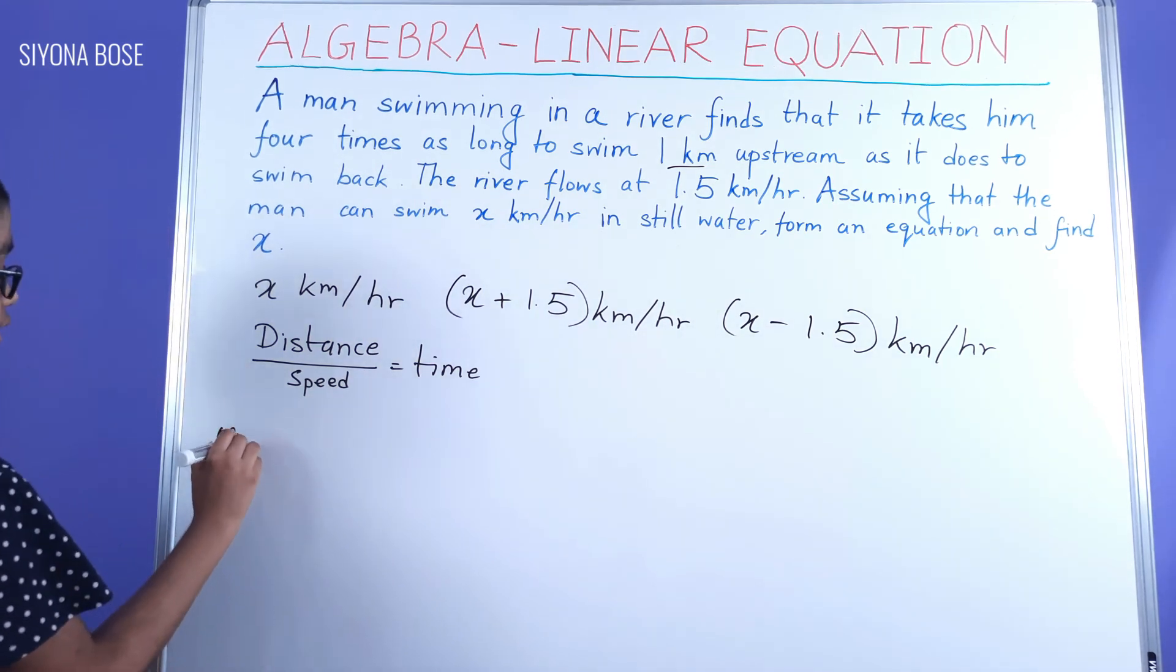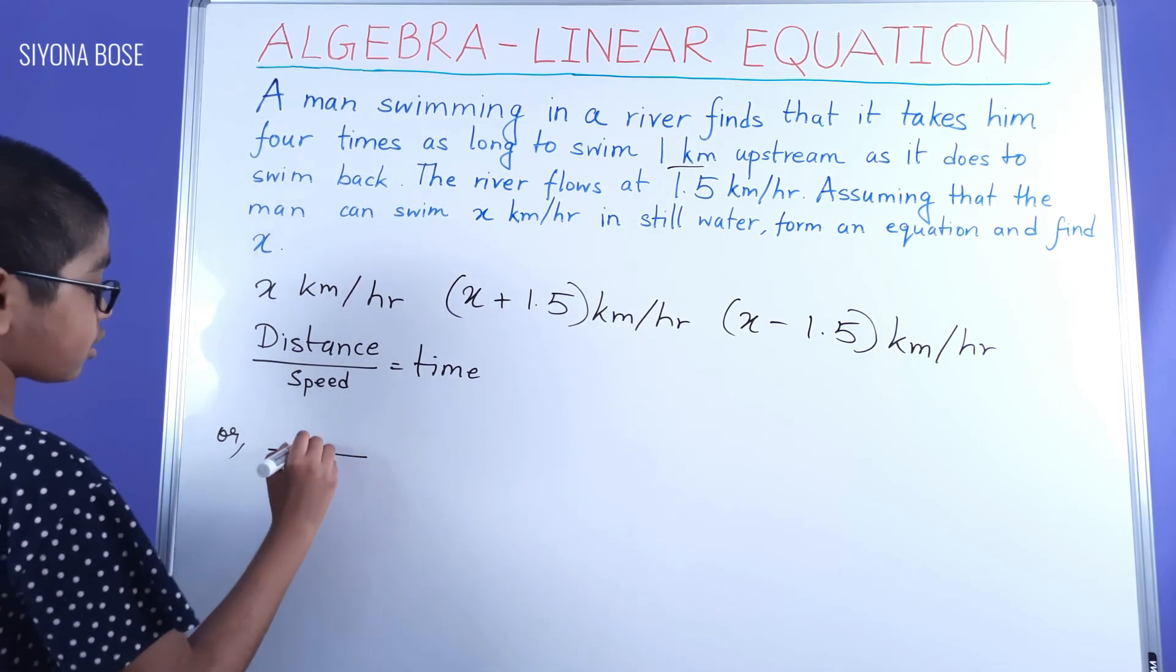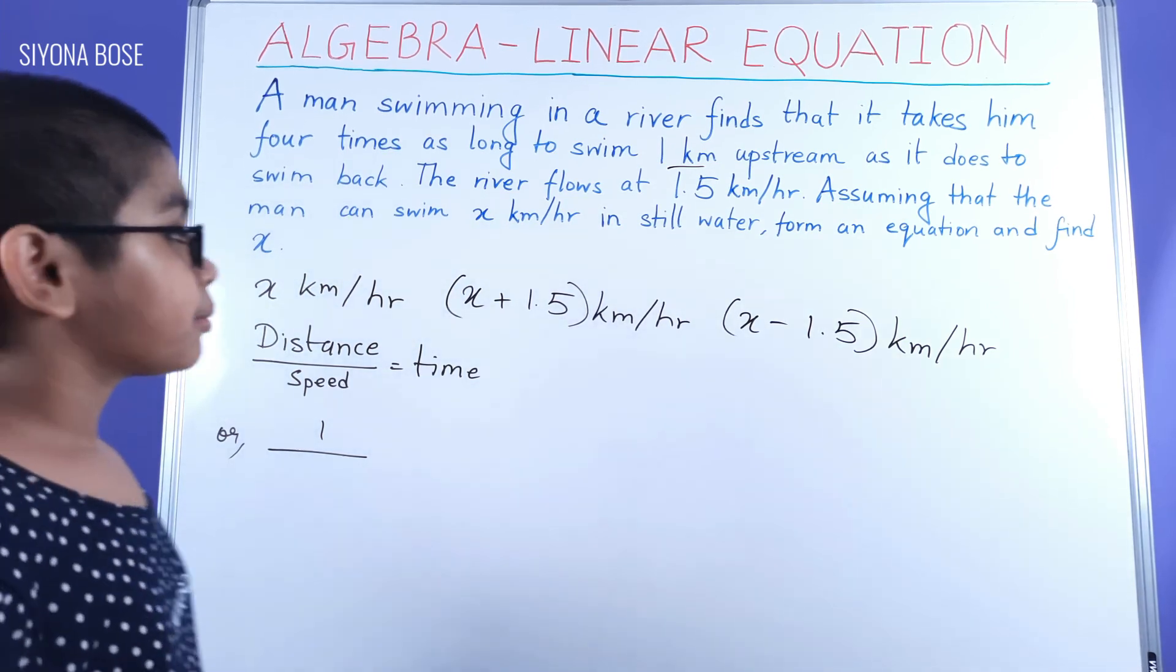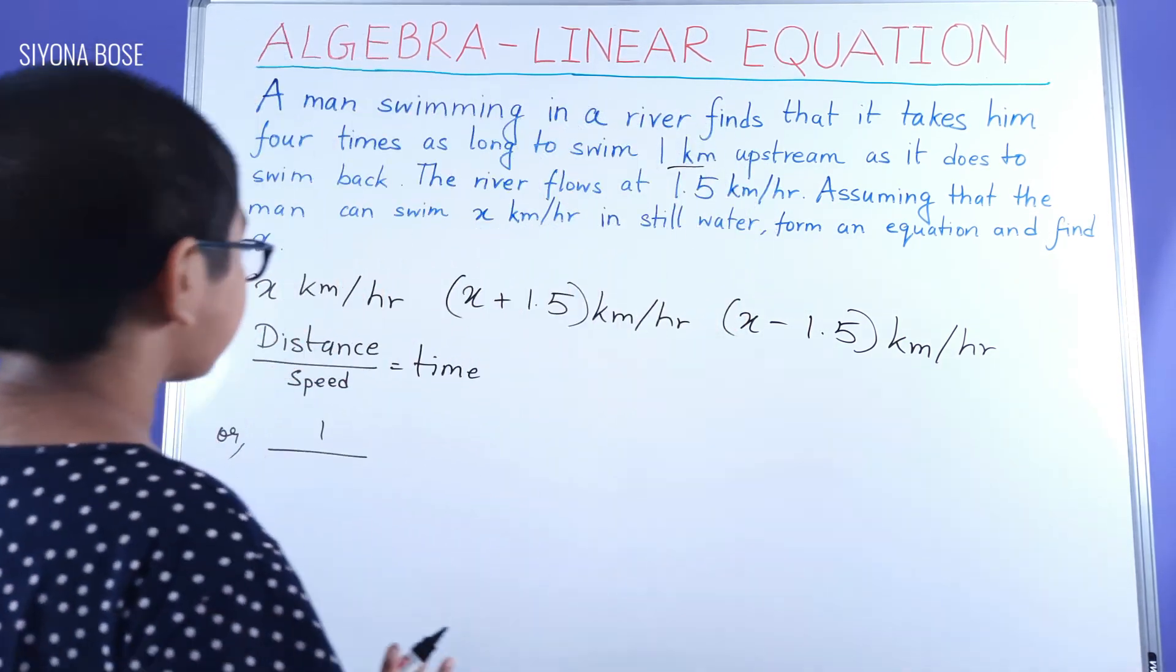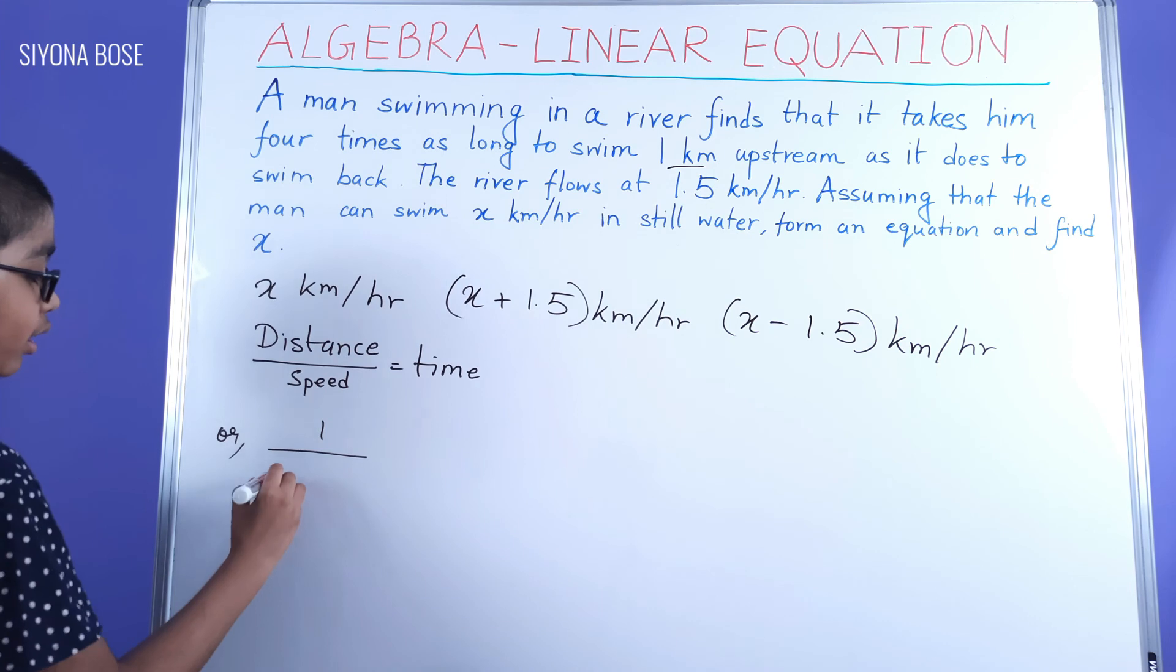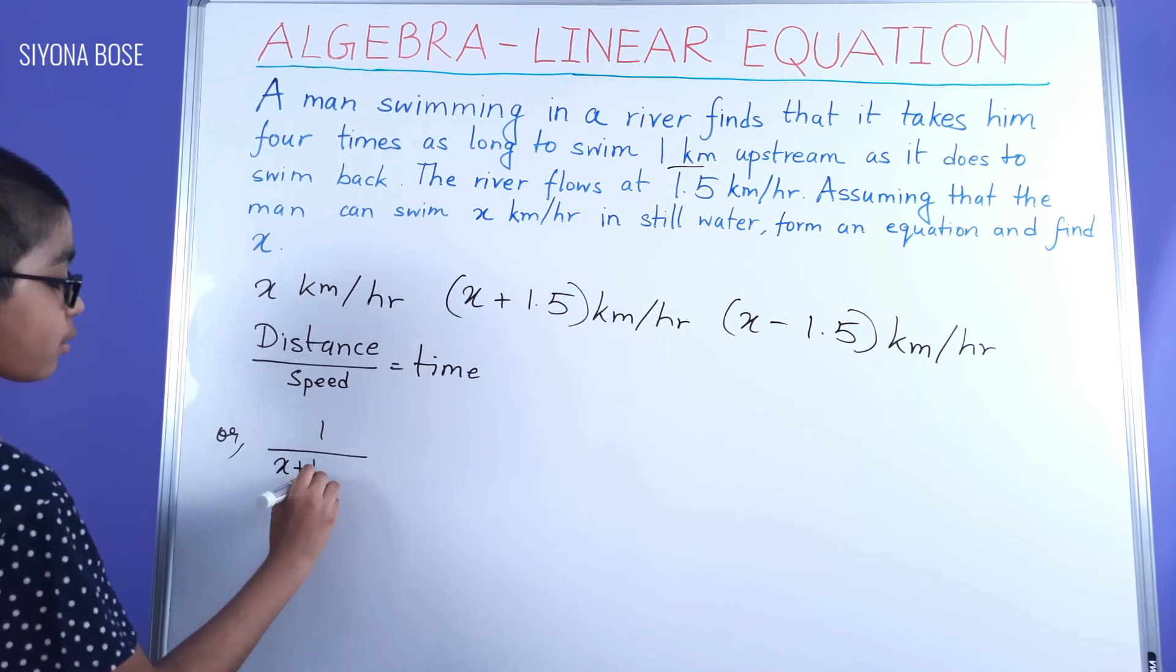We can write this as one by, over here, the speed. Let's take the downstream one, X plus 1.5...